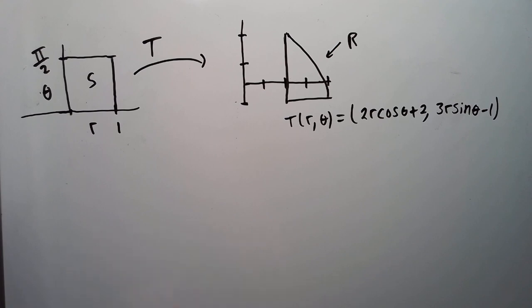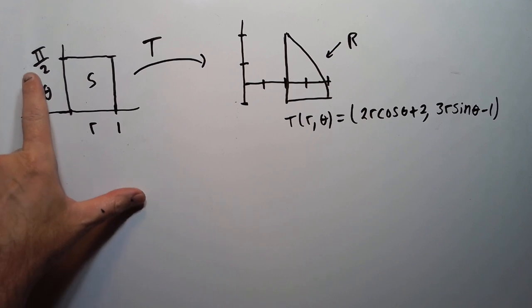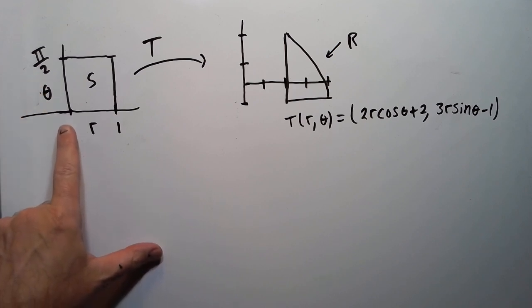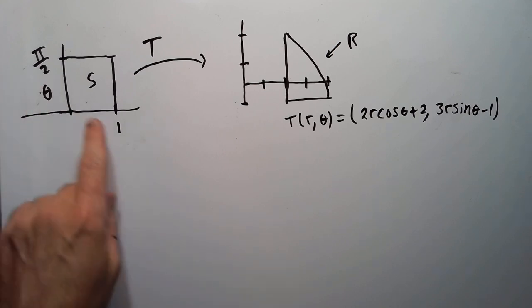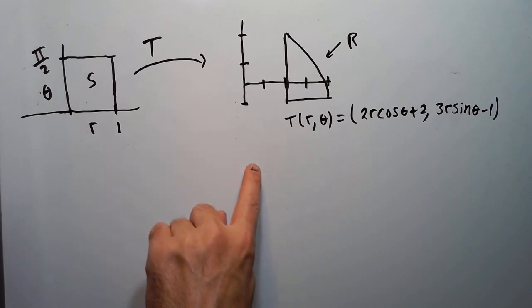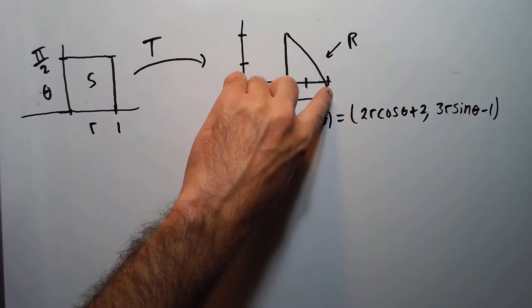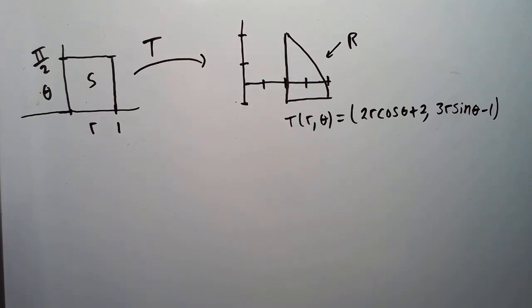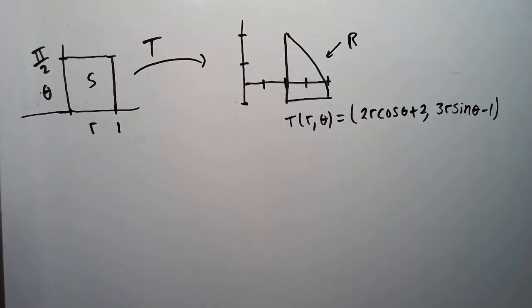Our region S will have θ going from 0 to π/2 and r going from 0 to 1. The theta doesn't go to 2π because that would go around the whole ellipse — we only have one-fourth of the ellipse here, so θ ranges from 0 to π/2.